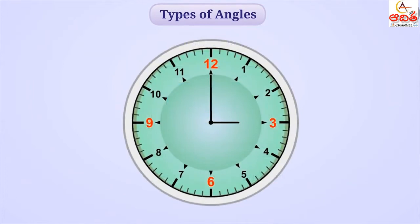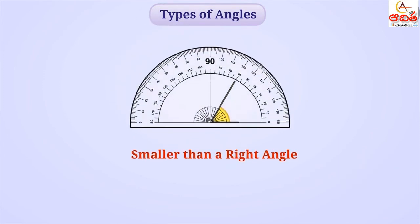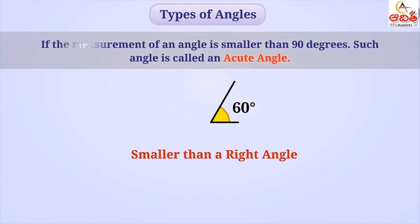Now consider we move the clock hands from 12 and bring it to 1. So now, one hand is on 3 and the other is on 1. Think whether the angle formed between both hands will be a right angle? Absolutely correct. This angle is smaller than a right angle. If the measurement of an angle is smaller than 90 degrees, such an angle is called an acute angle.